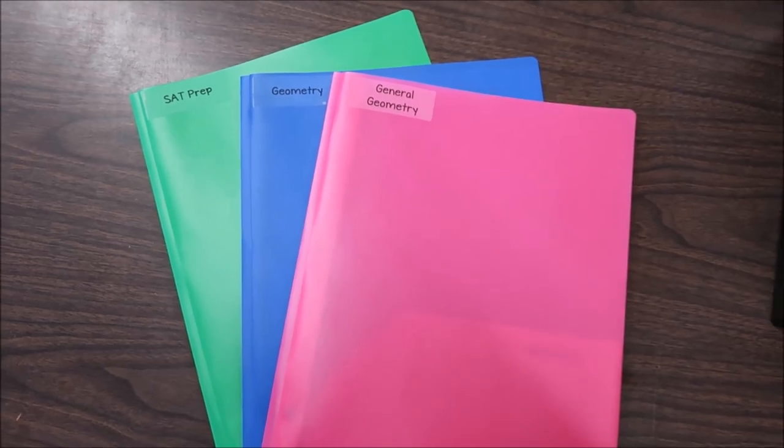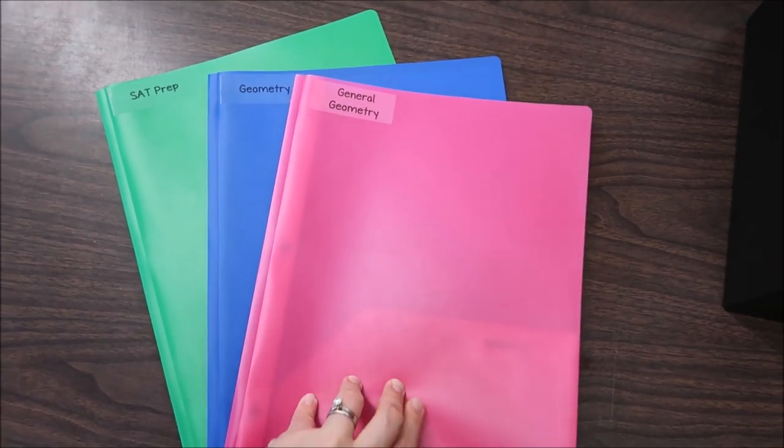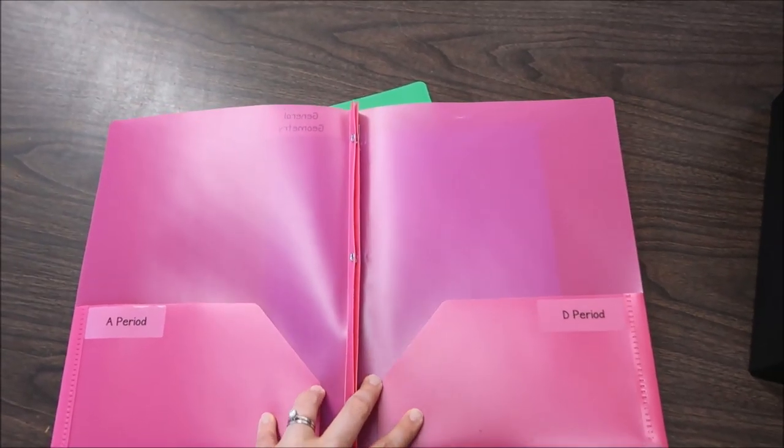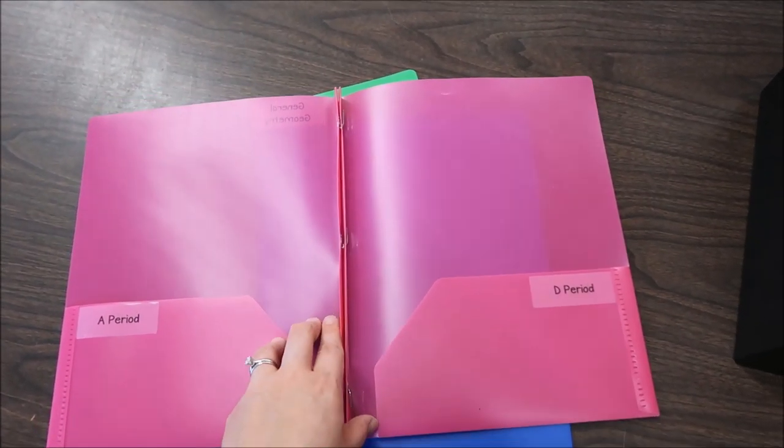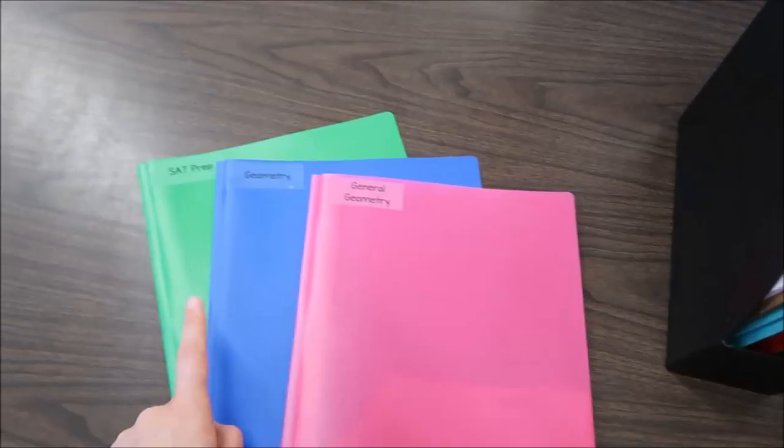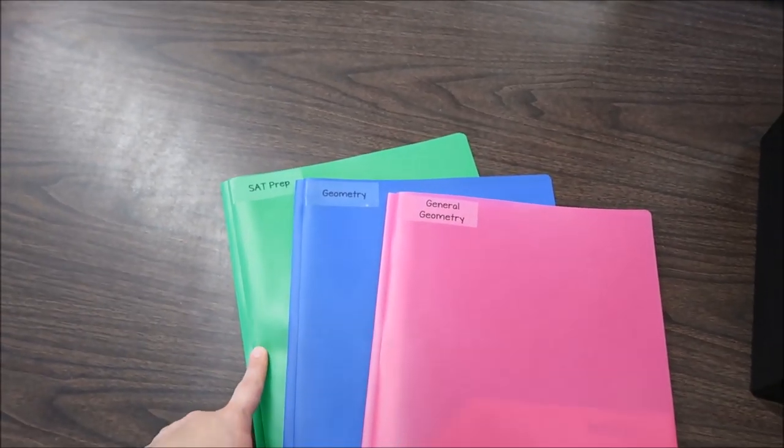These three folders are for each of my preps. So for general geometry I have two folders. I have an A period and a D period because I have two sections of this course. This is where typically I would keep any quizzes or tests that need to be made up. I do the same thing for geometry and for SAT prep.